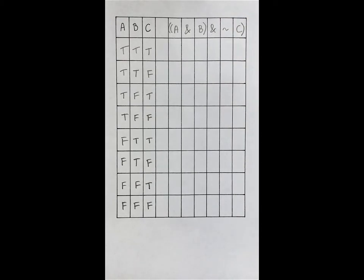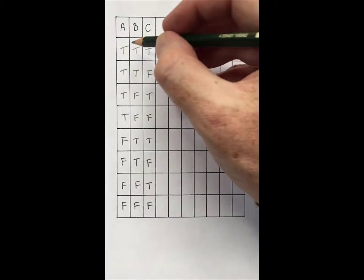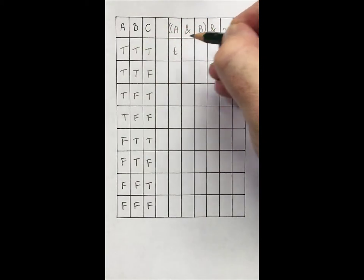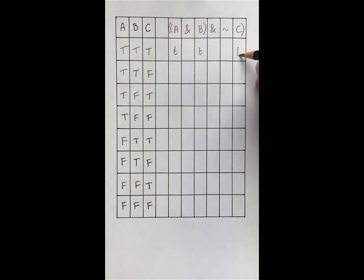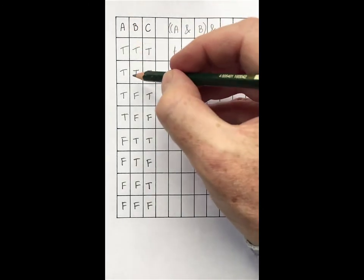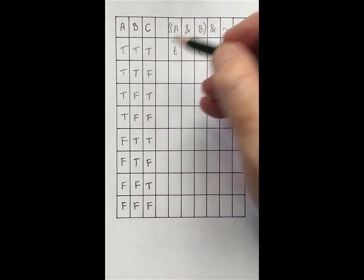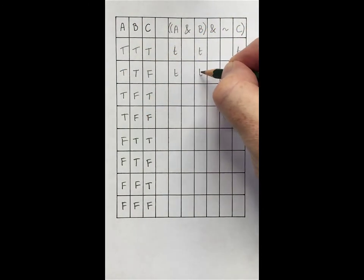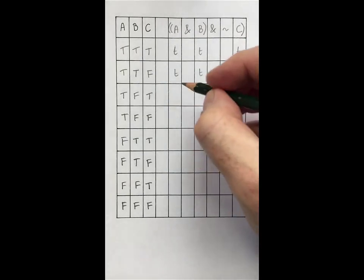The next thing we do is copy across the truth values of the basic sentences, like this. So, on the first row, A, B and C are all true. On the next row, A is true, B is true, C is false. And so on down the table.